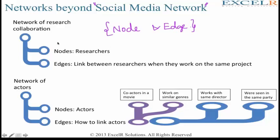Think about a research collaboration network. Nodes here would be the researchers - people who are researching on various concepts or various aspects. All these nodes represent various researchers, and the link between researchers is established when they work on the same project.